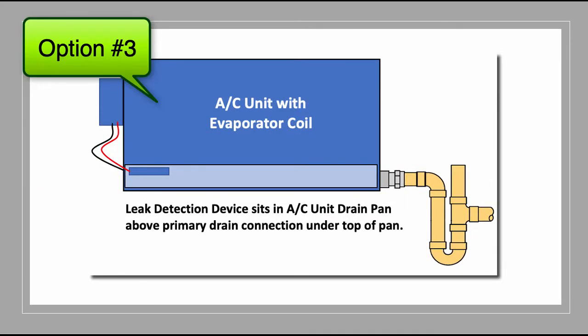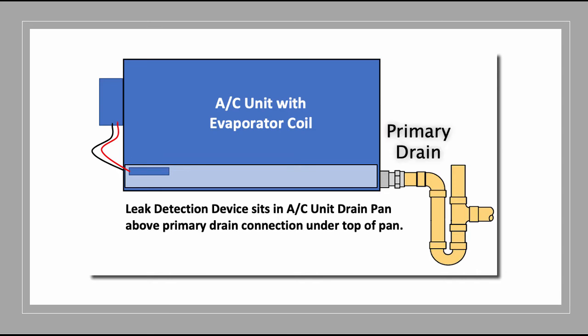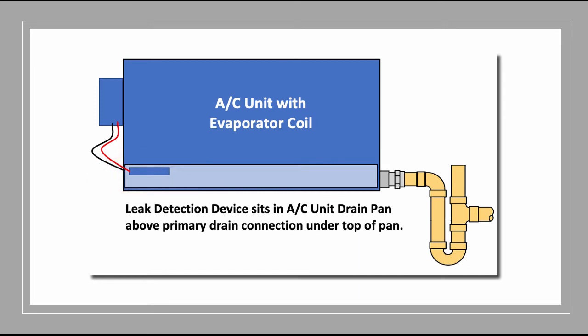Option three: you would use a leak detection device in your primary drain above the location of where the primary drain piping connection is. Once the primary drain clogs, it will start to fill up with water and hit the leak detection device before it reaches the very top of the drain pan. That leak detection device will shut the air conditioner down, preventing water from overflowing the pan.